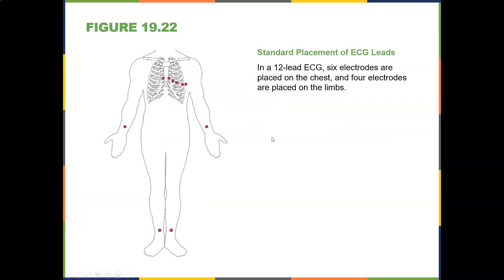Here's a 12-lead EKG: six electrodes are placed on the chest and four electrodes are placed on the limbs. If you've had an EKG done before, it measures the electrical activity in your body.